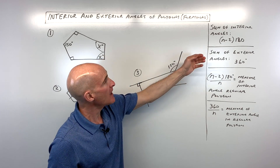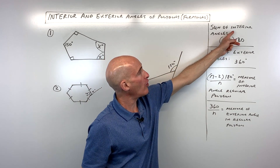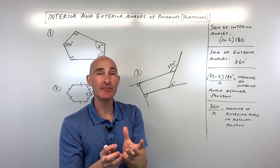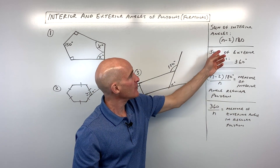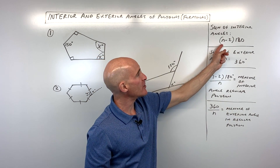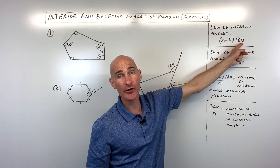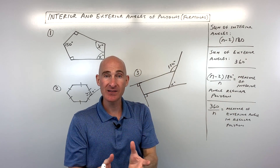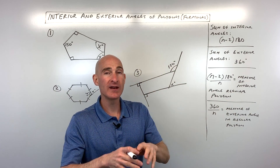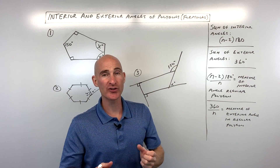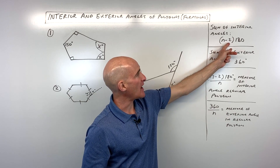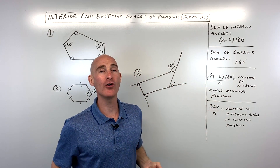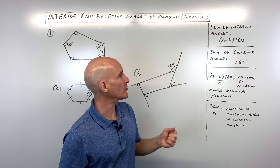If you want to find the sum of all the interior angles — all the angles on the inside of a polygon — use this formula: (n-2) times 180. Here, n represents the number of sides or the number of angles, which are going to be the same. You subtract 2 and then multiply by 180, and that gives you the total of all those interior angles.